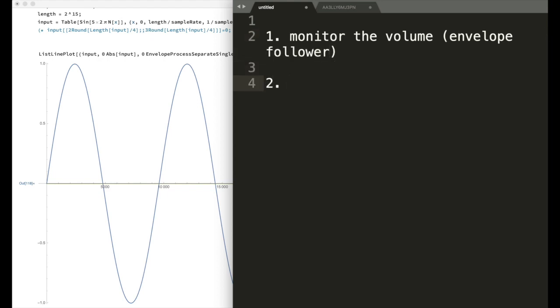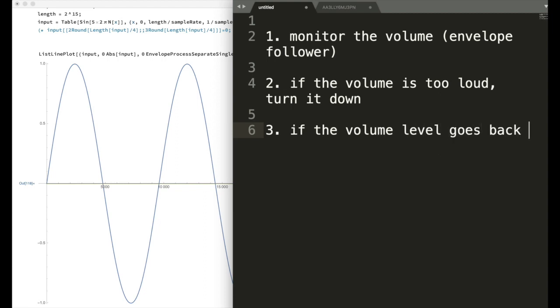The next thing that the compressor does is if the volume is too loud, turn it down. And then of course if it's not too loud, like if the level goes back down, then turn it back up. Turn it back up doesn't usually mean boost the volume, but just put it back to the original volume wherever it was before. Any compressor you have is basically going to be doing these three things. It has to have some component that's monitoring the volume, and as I said before we're calling that an envelope follower. And then it's somehow turning the volume down when it's too loud and turning it back up when it's not too loud anymore. That's very basic, but I just want to make sure that's clear before we start looking at how this actually works.